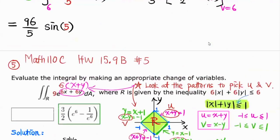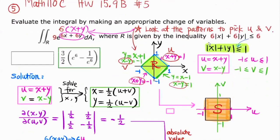Actually, number 4 — so number 5 — feels similar. However, this time the original region R is given by this inequality. If you divide both sides by 6, you get the absolute value of X plus the absolute value of Y less than or equal to 1. This region is actually a diamond shape. I think about it by first considering when both X and Y are positive: X plus Y equals 1 gives this segment.